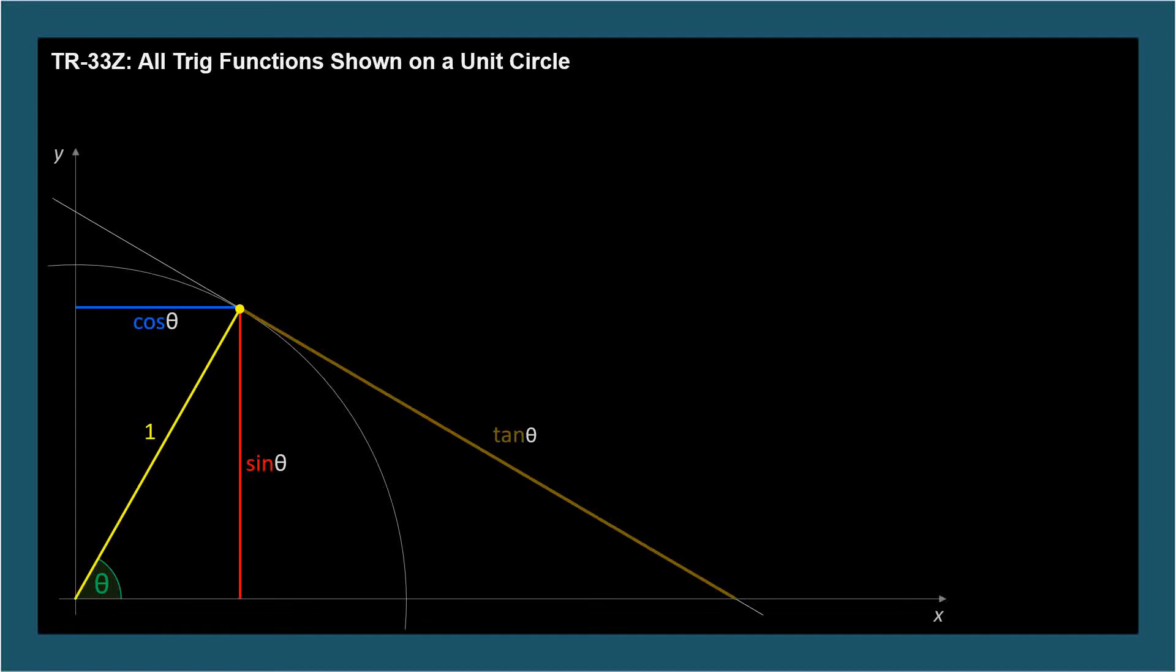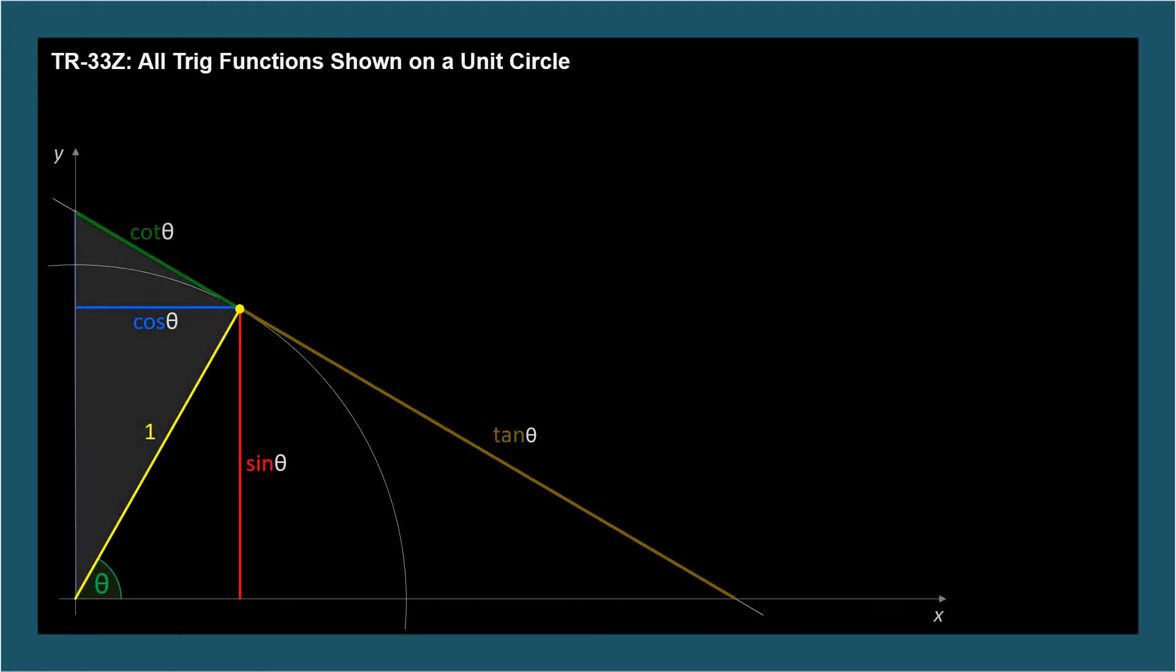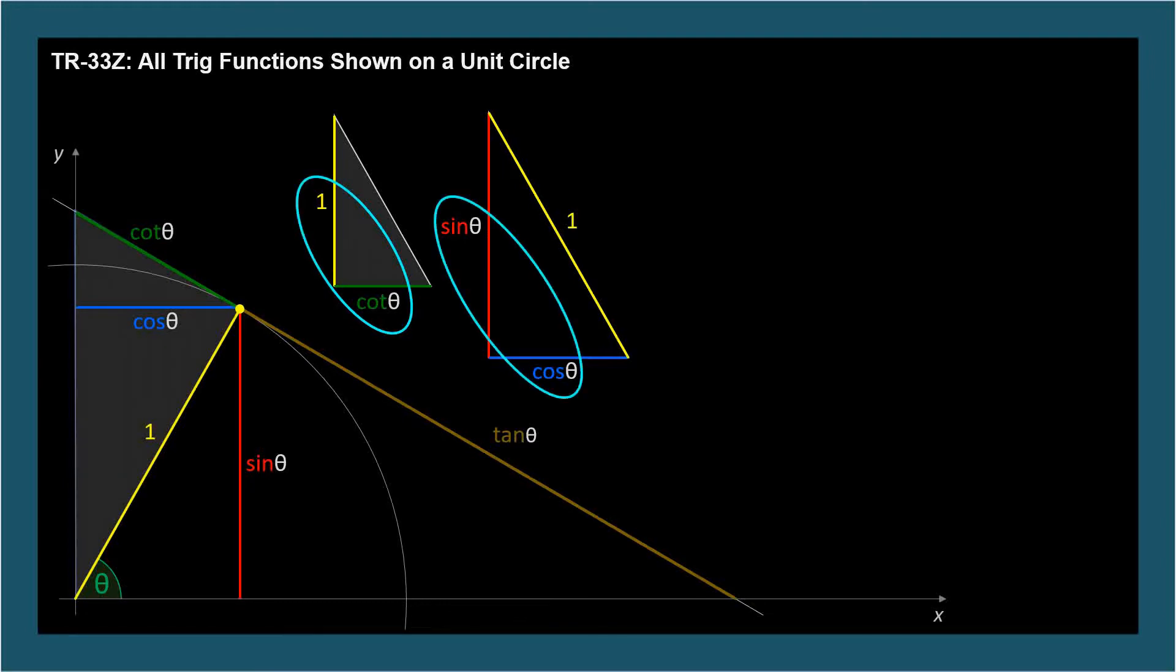So now let's consider this green segment. Its length corresponds to cotangent theta. We'll take this triangle with the cosine sine triangle and apply the same property of similar triangles. By carefully choosing the sides we compare to help isolate cotangent.